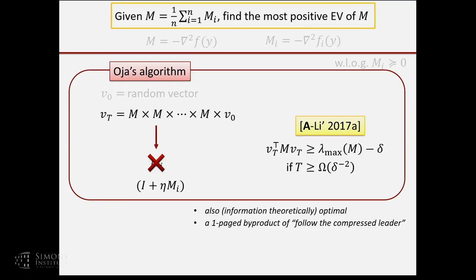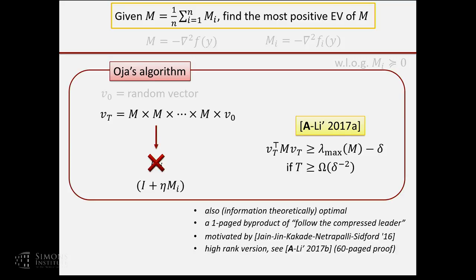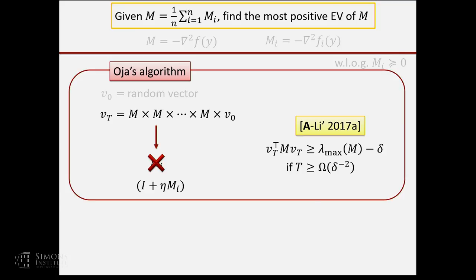The proof is only one page — it's tricky but short, coming as a byproduct of our follow-the-compressed-leader framework for the adversarial case. This proof was also motivated by beautiful work of Jin, Kakade, Netrapalli, and Sidford, who showed Oja's algorithm converges assuming an eigengap. Our result has no eigengap assumption. There also exists a block version of Oja's algorithm for finding the top k eigenvectors, with a 60-page proof appearing in this year's FOCS.